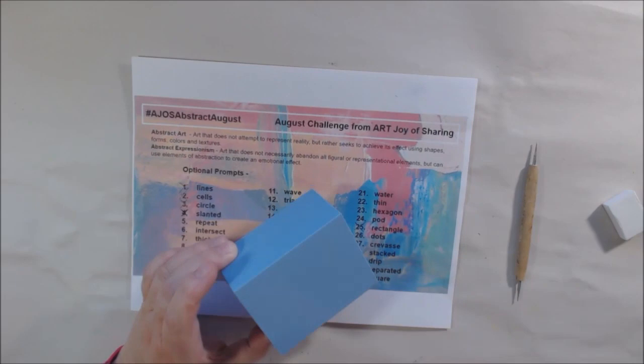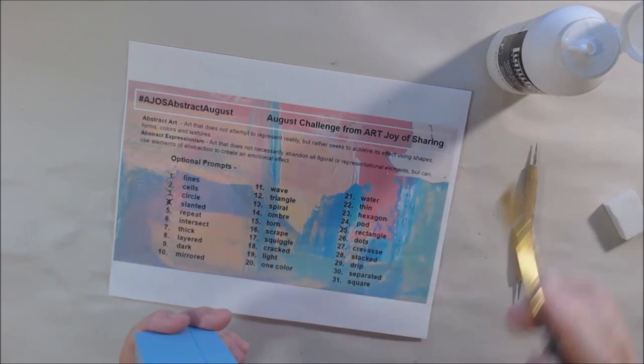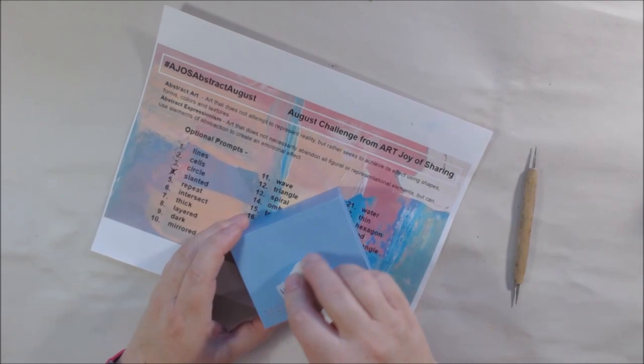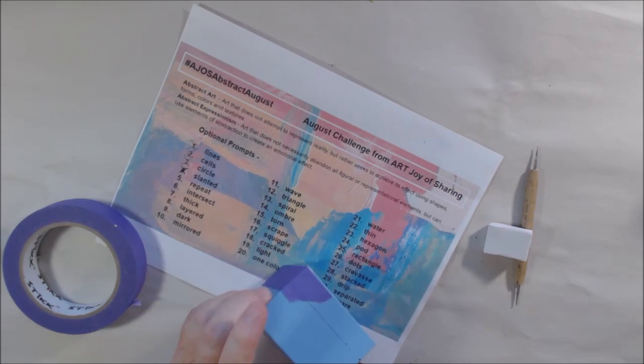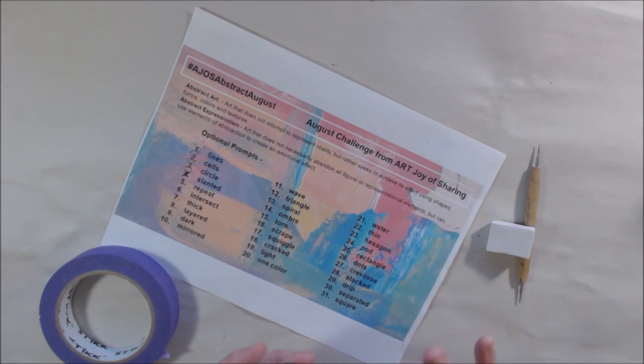With Abstract August today, hashtag AJOS Abstract August, I'm doing that all month. I thought it would be fun to use one of the prompts on something besides a tag, because all my previous ones for the month so far have been on shipping tags that I'm trying to use up that have paint on them. I liked the blue color of this but I didn't want to keep the logo on the bottom.